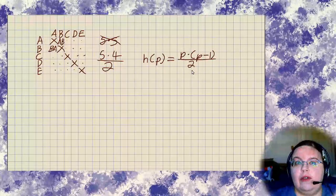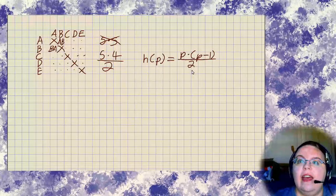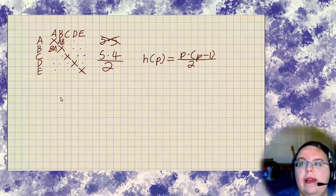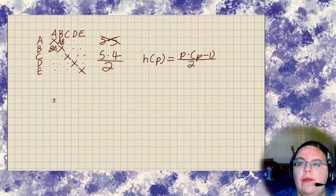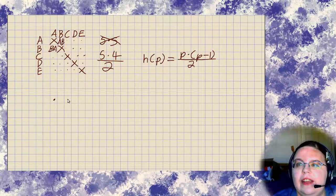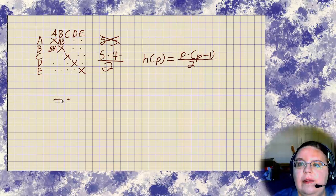Now, there are other methods for dealing with problems like this. Somebody else might say, okay, well, let's sketch this out. So if one person is getting acquainted, that's nobody shaking hands. Two people would be one handshake.